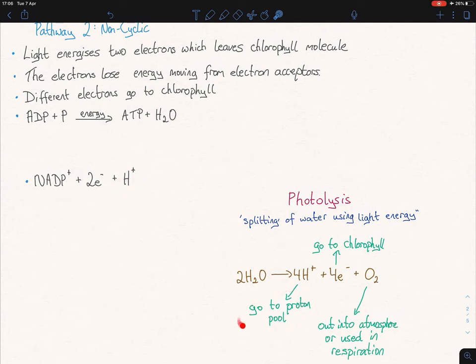The oxygen goes off into the atmosphere or is used in respiration or whatever. But the protons, this is where the protons are coming from, over here. So that's really important. They go to this thing called a proton pool, and then the H plus is plucked out of that pool and used in this reaction to form your NADPH. NADPH is the key molecule here used to help make glucose.